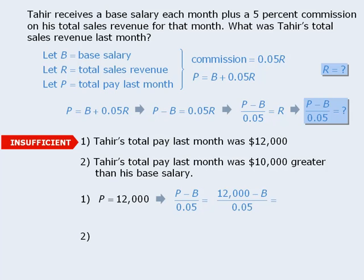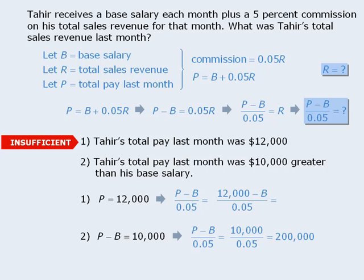On to statement 2. Here we are told that Tahir's total pay last month was $10,000 greater than his base salary — in other words, P minus B equals $10,000. Does this provide enough information to find the value of our new target question? Sure — if we replace P minus B with 10,000, we can see that we can evaluate this fraction to be 200,000. So statement 2 is sufficient, which means our answer is B.